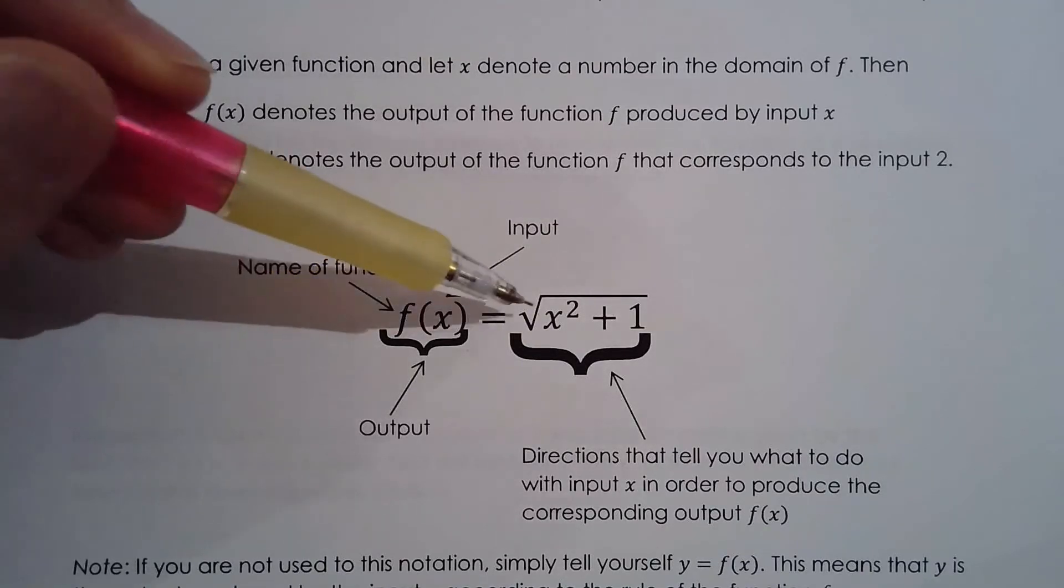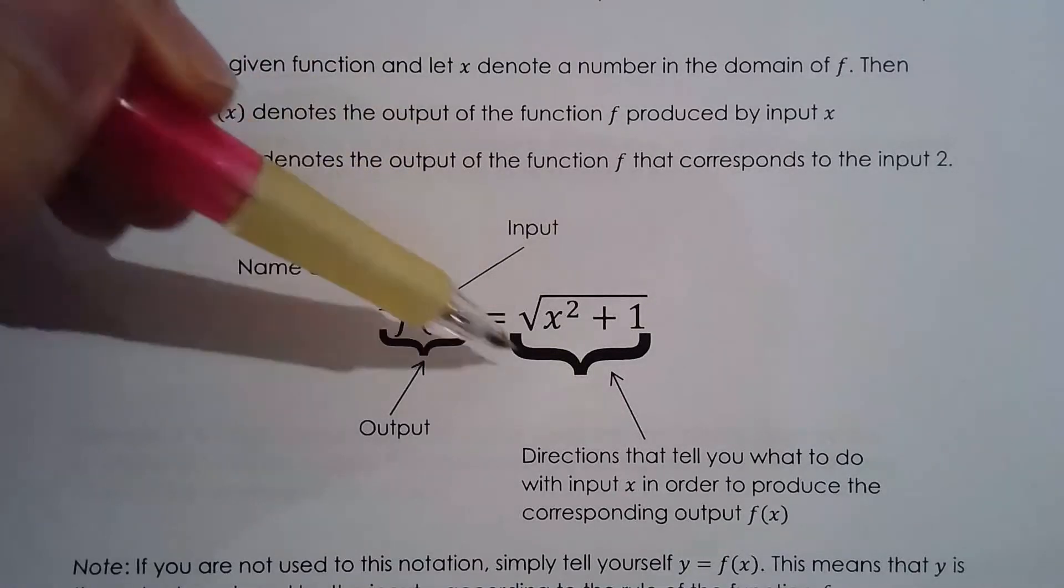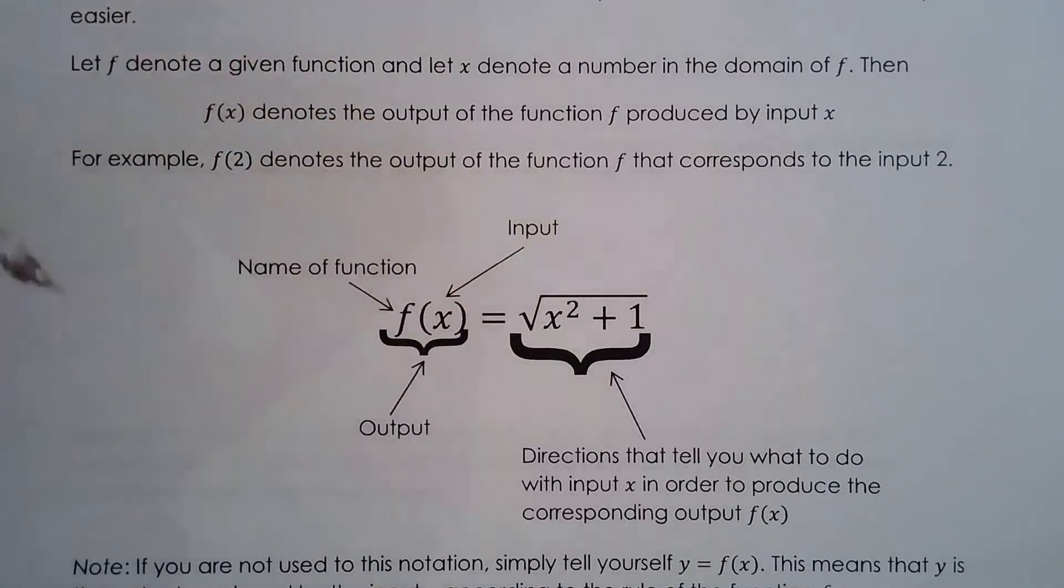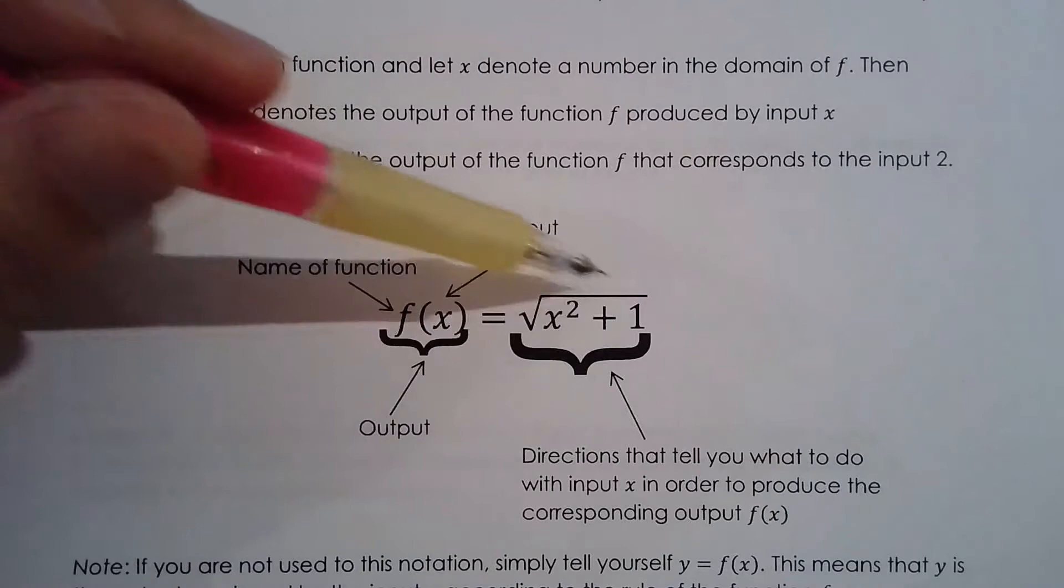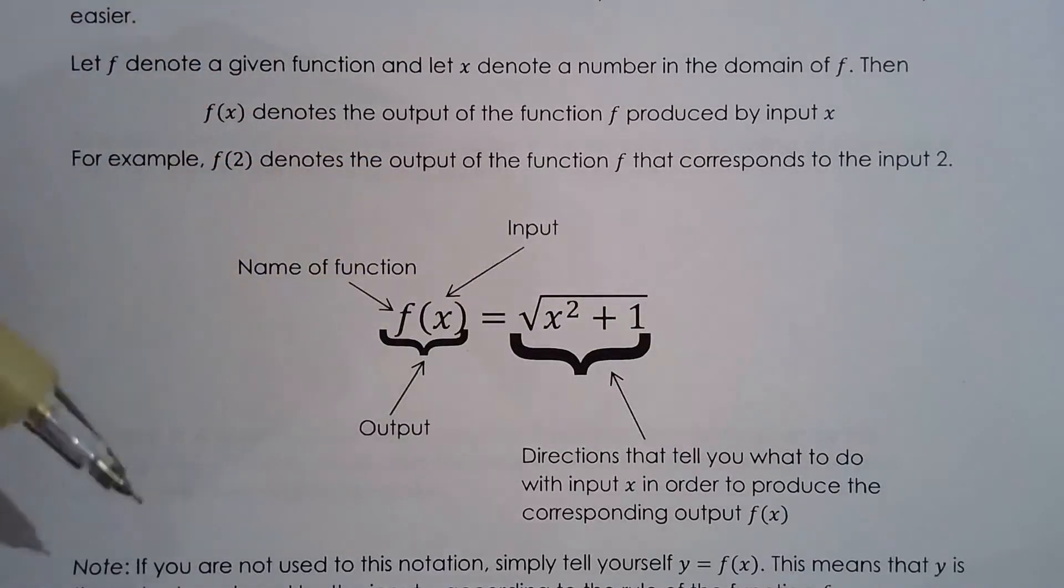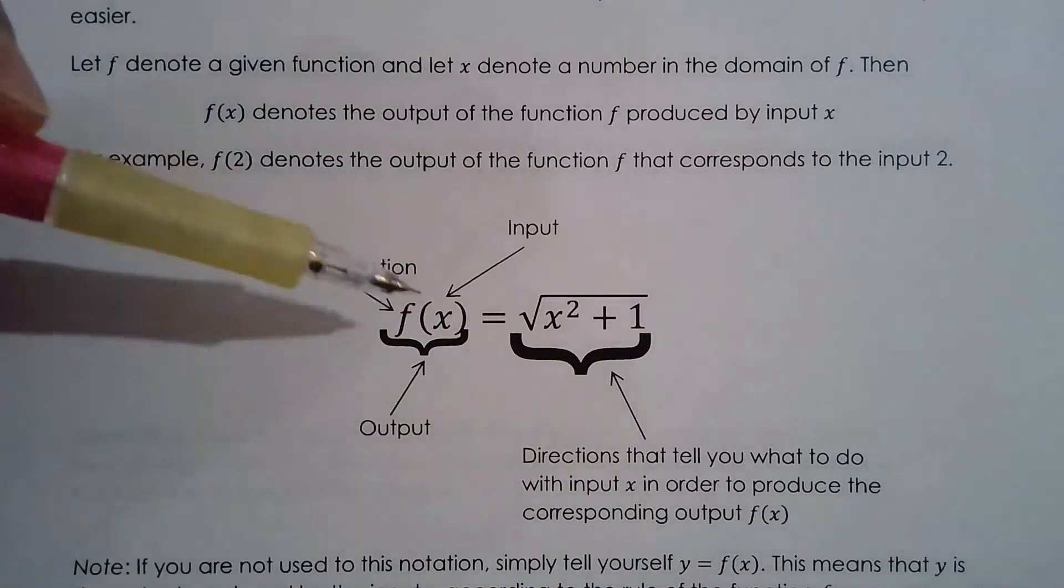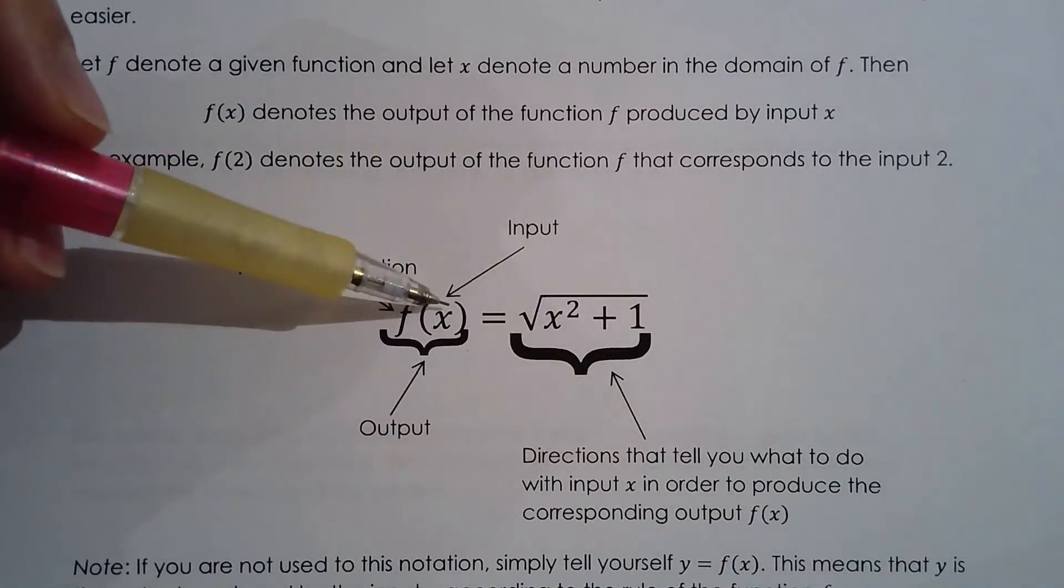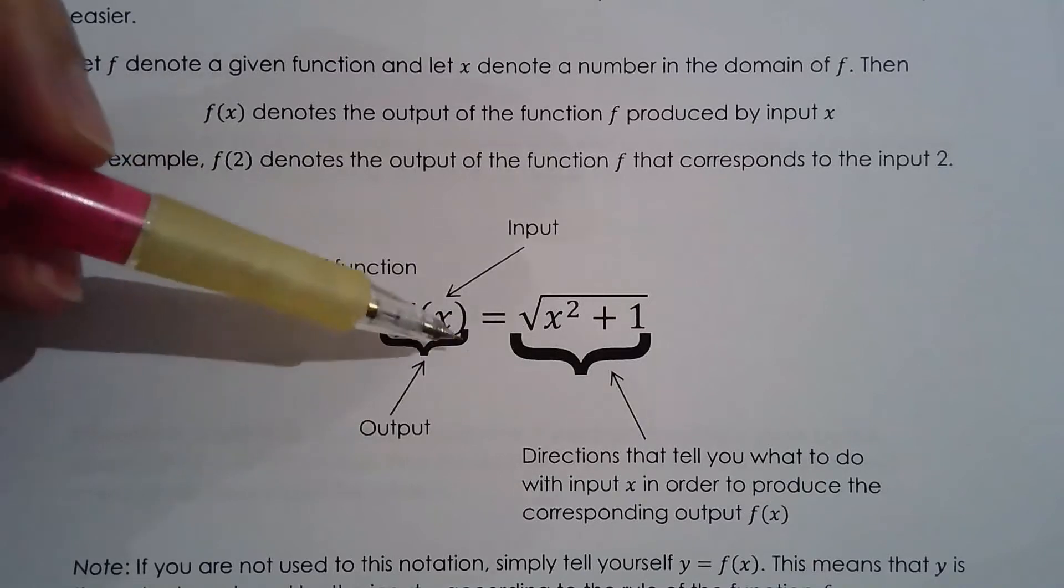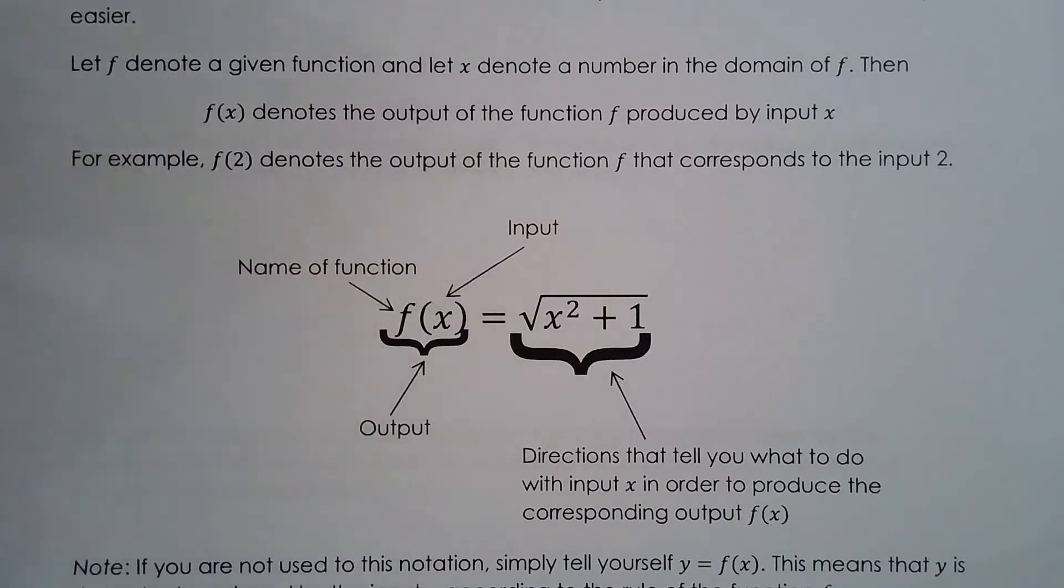What you have in the brackets here, that's your input, that's what you're subbing into the machine. What we have here is f of x equals in this case square root of x squared plus 1. So this is the directions, like what is the machine going to do with the input value. In this case you're going to square it, you square your input, add by 1, and then take the square root of that sum.